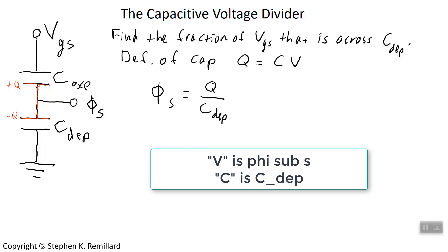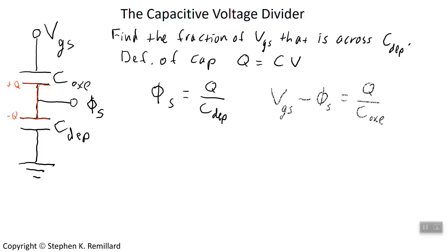The oxide capacitor, same exercise. The voltage drop across it is V gate source minus phi sub s, and so we'll write the definition of capacitance for that one. All we have to do is eliminate Q between these two equations.